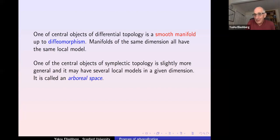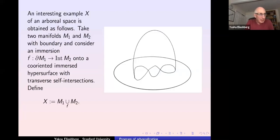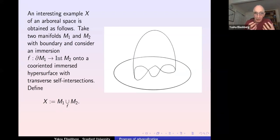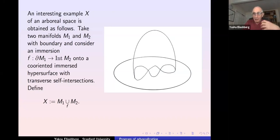This more general object is called an arboreal space. As a typical example, take a 2-manifold with boundary, take an immersion of one such manifold into the interior of another, glue the two parts together, and require the immersion to have transverse self-intersection. I want to stress that an arboreal space is a pure object of differential topology — it came from symplectic topology, but you can study its topology without ever mentioning symplectic structure, and the corollaries will be results in symplectic topology.